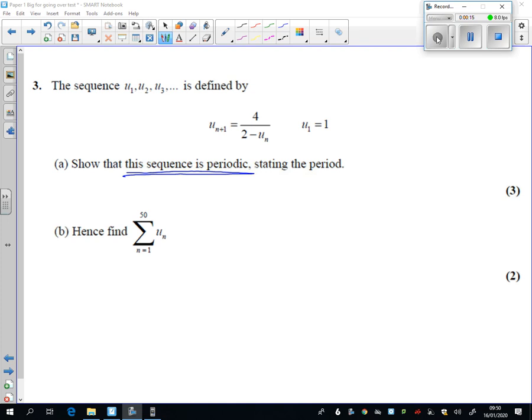What happened in the mock for us is that a lot of people just couldn't start it. So we're told that the first one's 1. Let's go for the second one. The second one is 4 over 2 take away 1, so the second term is 4.